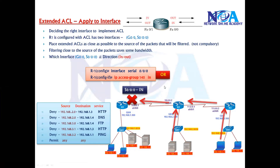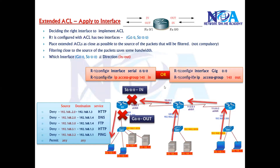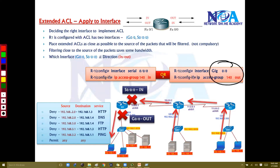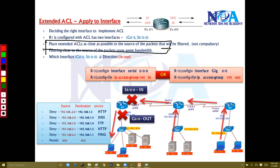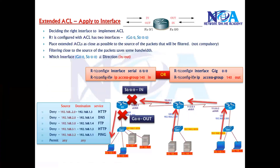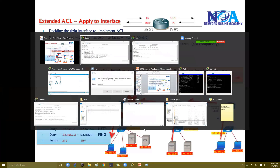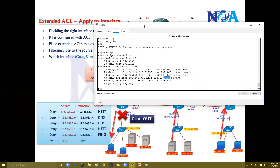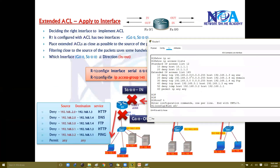If you apply the ACL on G0/0, the direction would be outbound, because traffic is leaving that interface toward the LAN. Both options are correct and will work — you only need to apply it on one interface, not both. In this case, I'm going to apply it on S0/0/0 inbound.